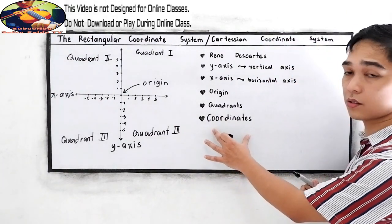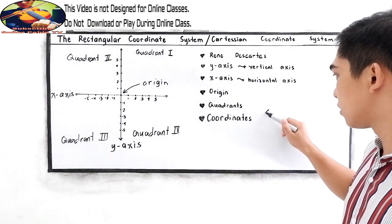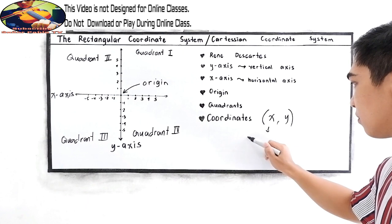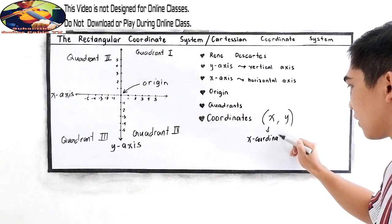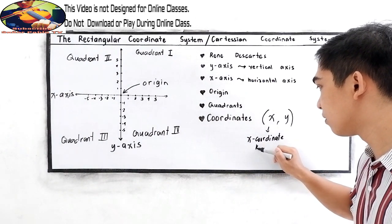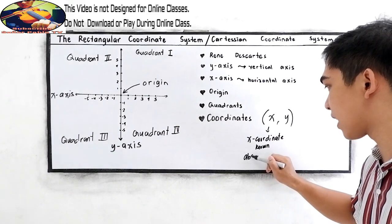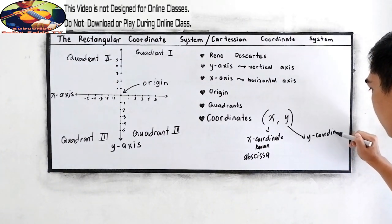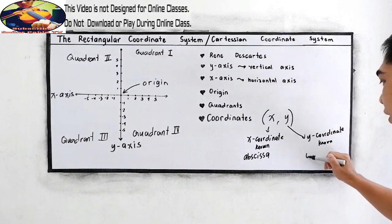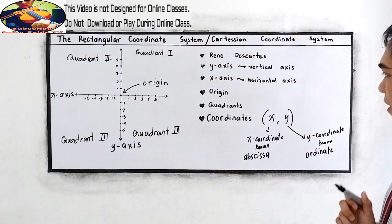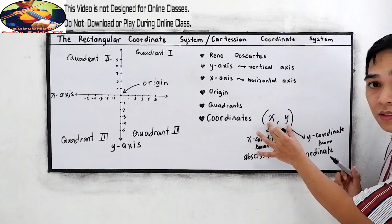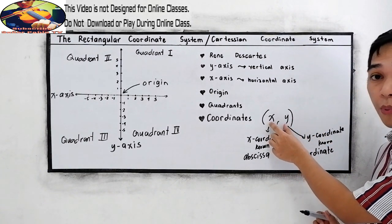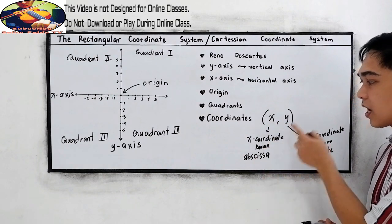Next, we have the coordinates. Our coordinates are composed of the x-coordinate and the y-coordinate. The x-coordinate is also known as the abscissa, and the y-coordinate is also known as the ordinate. Take note that our coordinates are composed of x and y, so it is an ordered pair — meaning it is composed of two numbers: the x-coordinate or abscissa, and the y-coordinate or ordinate.